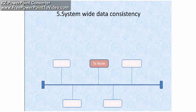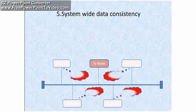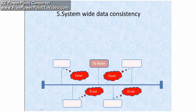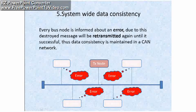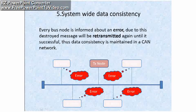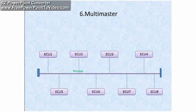You can see in this picture that all four receivers are replying to the transmitting node by sending their error frames. So every bus node is informed about an error. Due to this, the destroyed message will be retransmitted again until it is successful — thus data consistency is maintained in a CAN network.